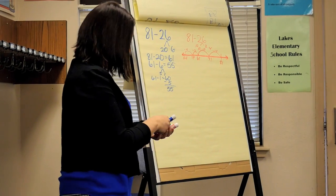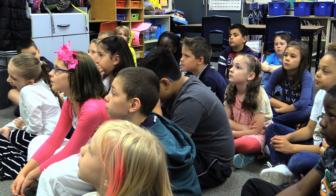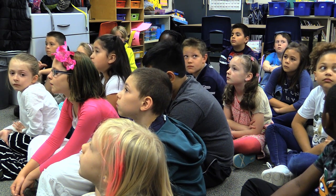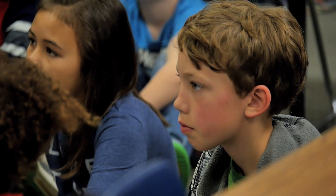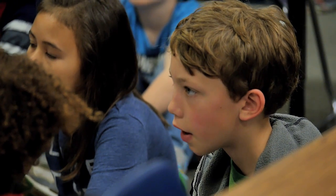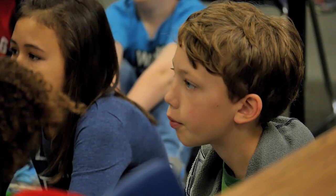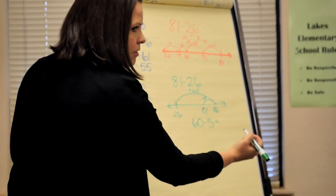How about Caden? I think this might be our last one. I started at 26. I jumped 60 and that got me to 86. Then I had to go back 5 because I jumped 5 too many, and that got me to 81. My answer came from 60 minus 5 equals 55. Thank you.